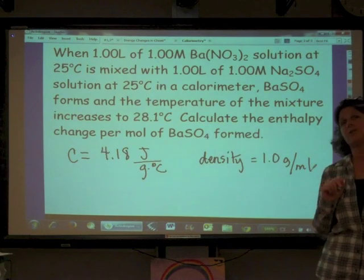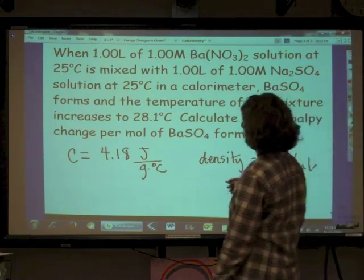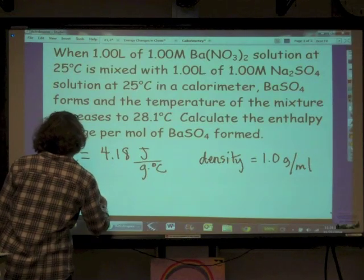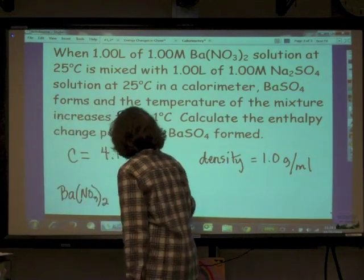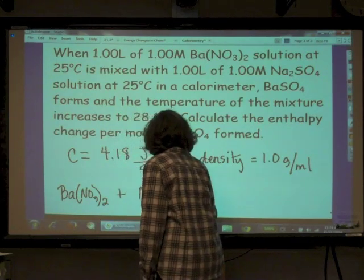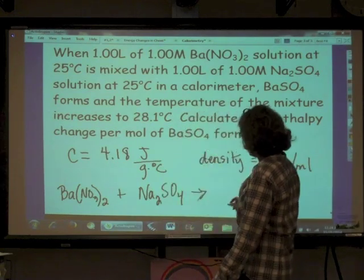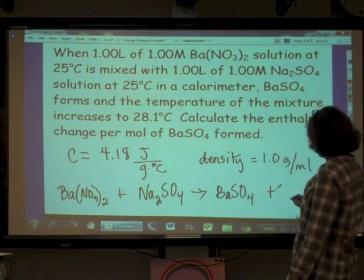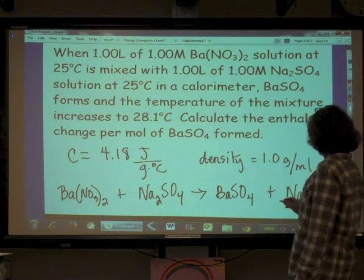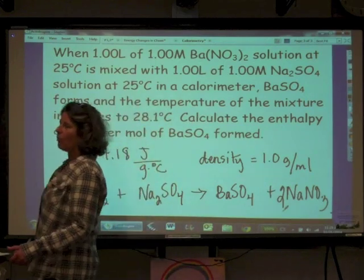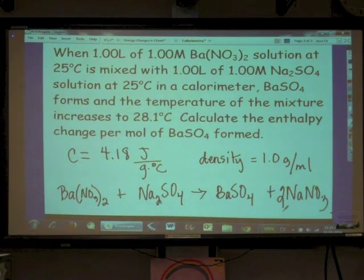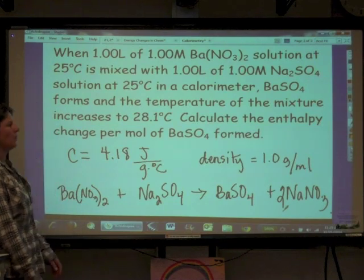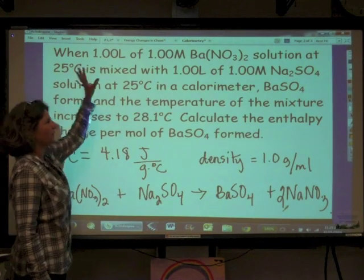To do this problem, first we need a balanced equation. We're combining barium nitrate plus sodium sulfate. We're going to make barium sulfate and sodium nitrate, with a coefficient of 2 for sodium nitrate. What we're trying to figure out is the delta H of this reaction based on the information given.